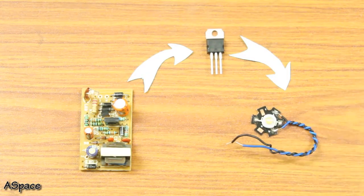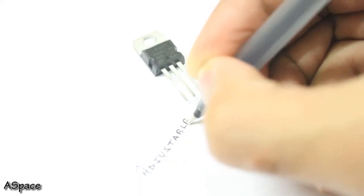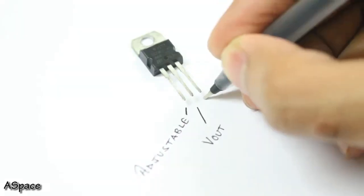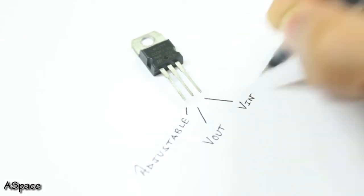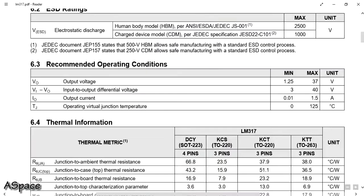Now coming back to the voltage regulator. It has three pins: adjustable, voltage out, and voltage in. This voltage regulator can handle up to 1.5A max, according to the datasheet. Now you know why.